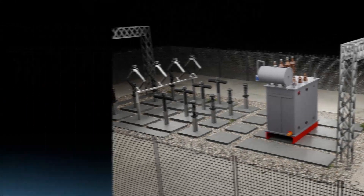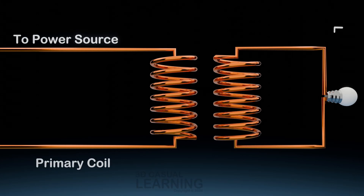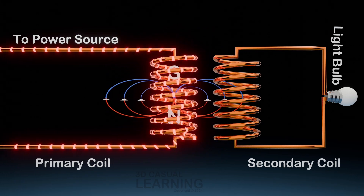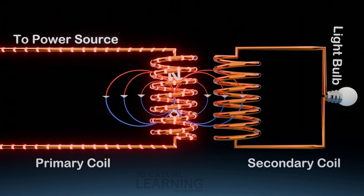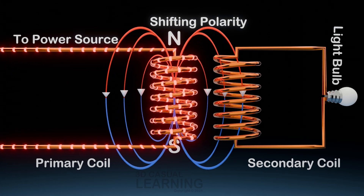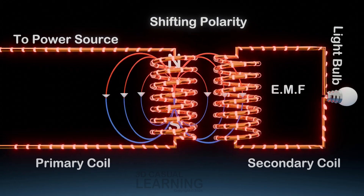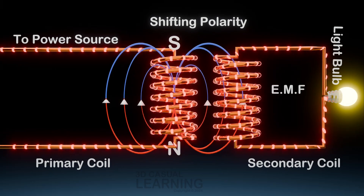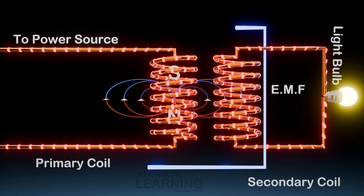The principle of a transformer is based on electromagnetic induction. Imagine you have two coils of wire: one connected to a power source, which is the primary coil, and the other connected to a device you want to power, known as the secondary coil. When an alternating current flows through the primary coil, it creates a changing magnetic field around it. The constantly shifting polarity and strength of the magnetic field consistently disrupts the unbound electrons within the secondary coil, compelling them to shift positions. This movement is known as electromotive force, or EMF. As a result, electricity flows through the secondary coil, powering the device connected to it. This setup is basically a transformer.